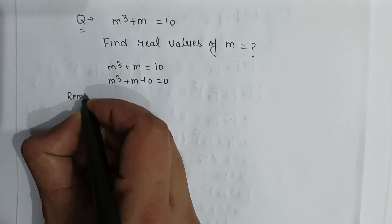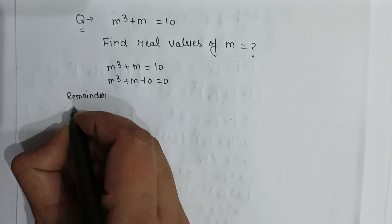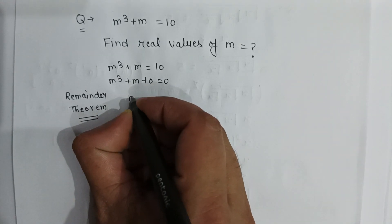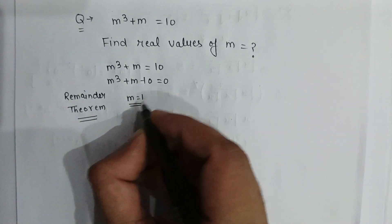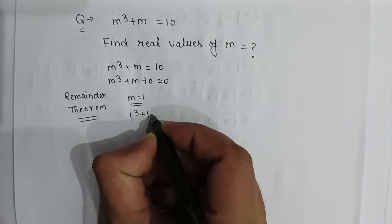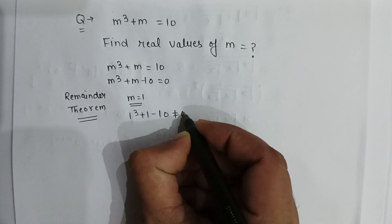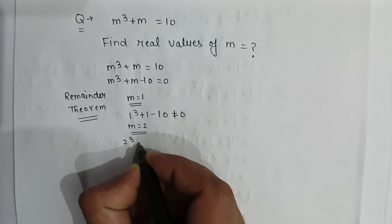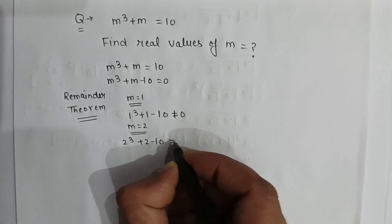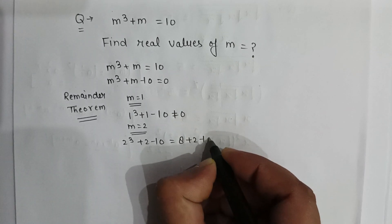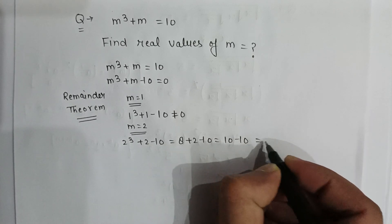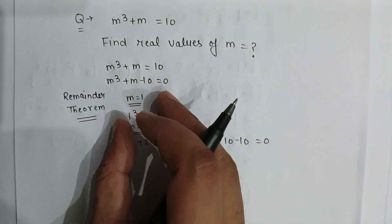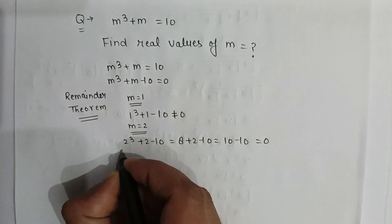We will use the remainder theorem here. If m is equal to 1, then it will be 1 cube plus 1 minus 10, which is not equal to 0. If m is equal to 2, then it will be 2 to the power 3 plus 2 minus 10, that is 8 plus 2 minus 10, which equals 10 minus 10, equal to 0. So m equals 2 is a factor of this cubic equation.